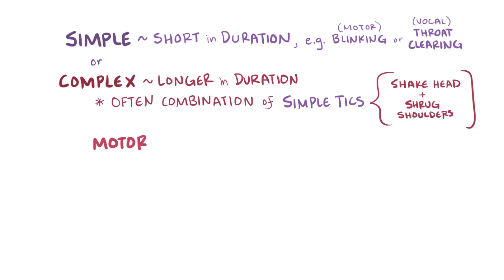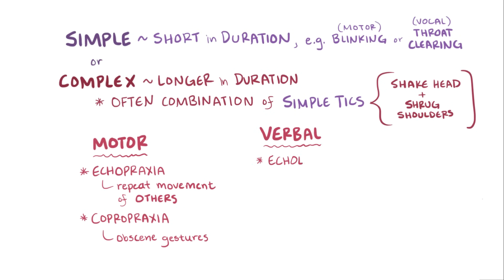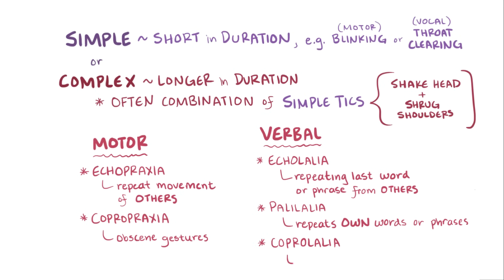Complex motor tics can also include echopraxia, which is a tic-like repetition of the movements of others, as well as copropraxia, which involves tics with obscene gestures. Complex verbal tics can include echolalia, which is repeating the last word or phrase heard from others; palilalia, which is a repetition of a person's own words or phrases; or coprolalia, which is saying inappropriate words or obscenities.